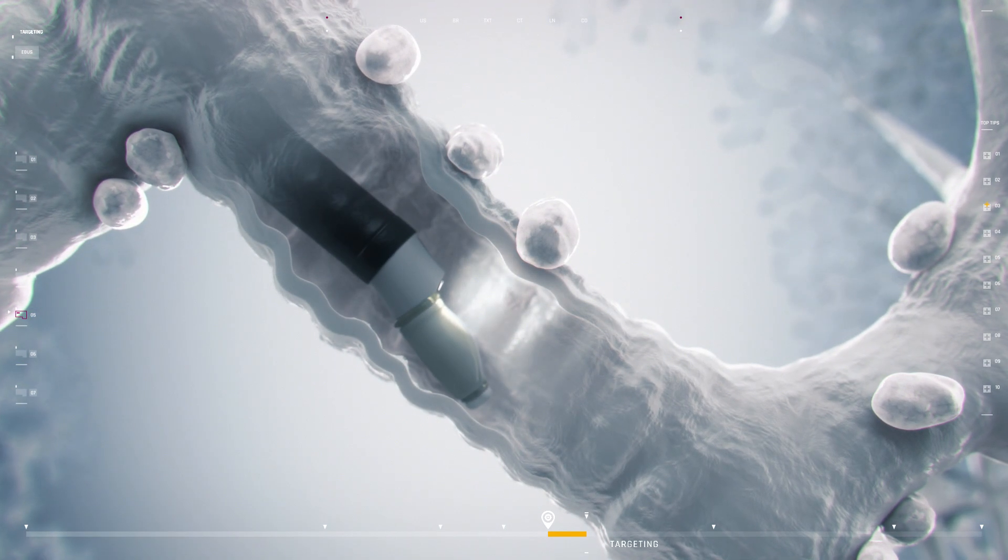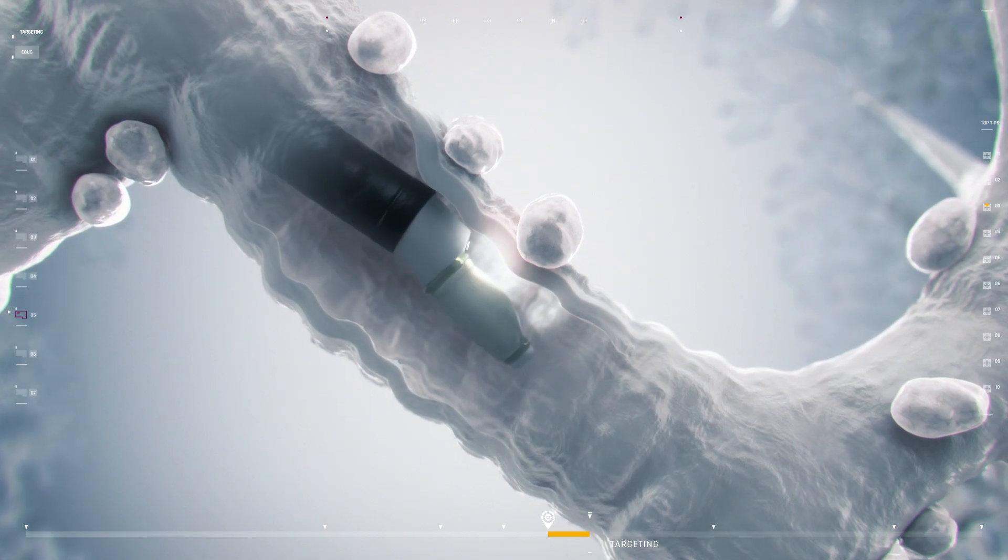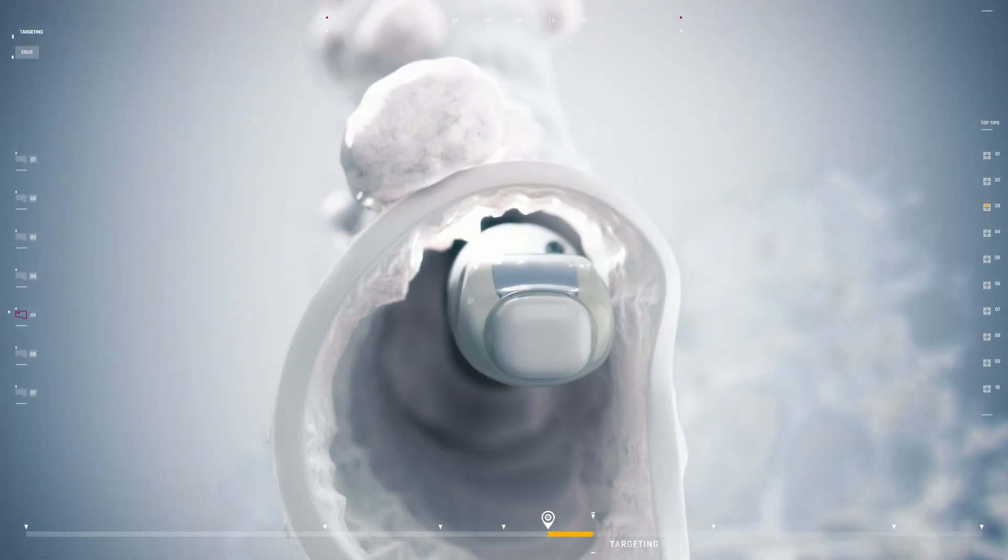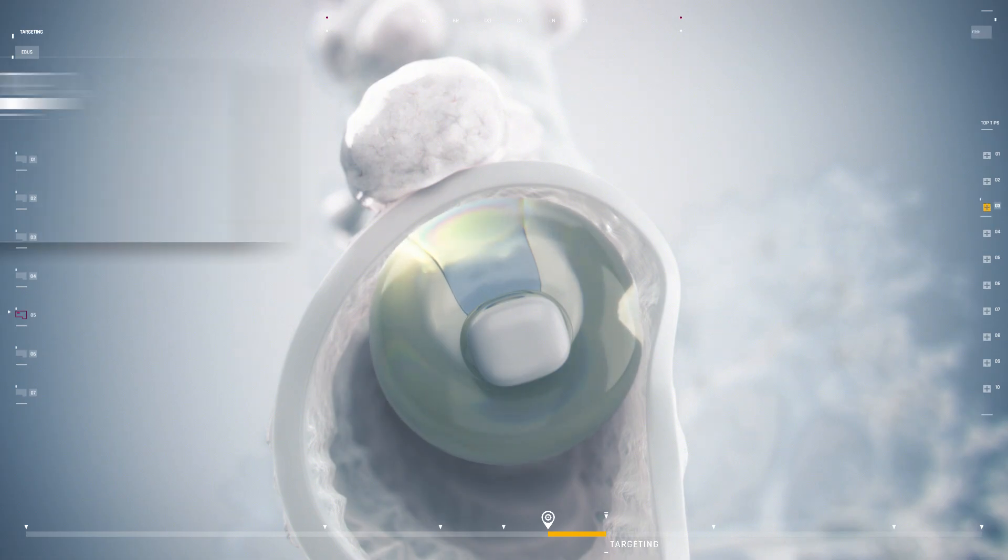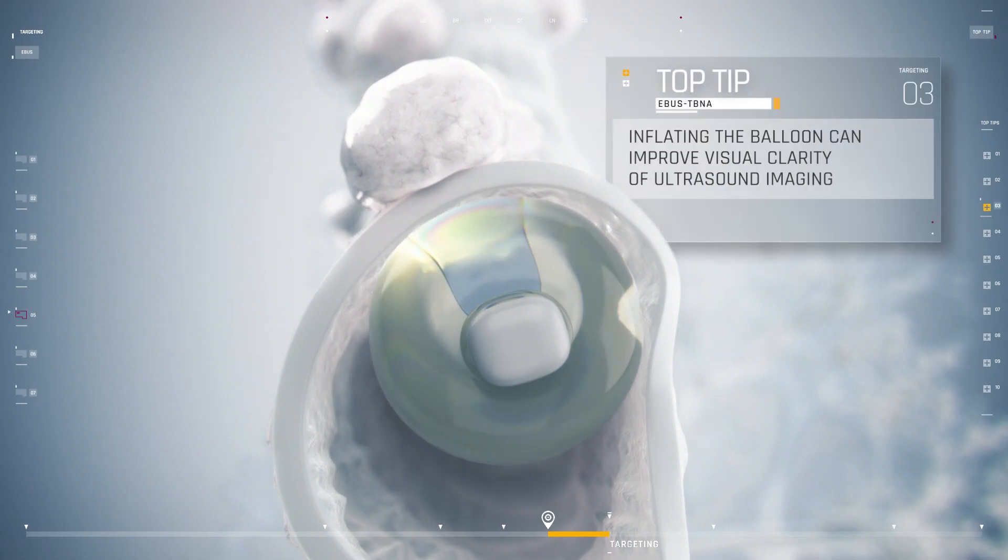Once the EBUS scope is positioned at the approximate location of the target area, the scope is flexed to gain contact with the airway wall while being rotated from side to side to obtain the image of the target lymph node. Inflating the balloon on the tip of the bronchoscope with saline may be necessary to maintain good contact between the airway mucosal surface and the probe, optimizing image quality.